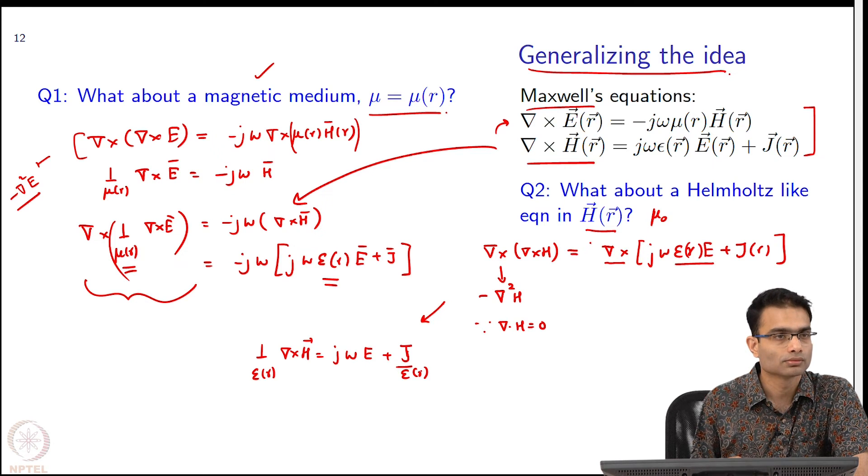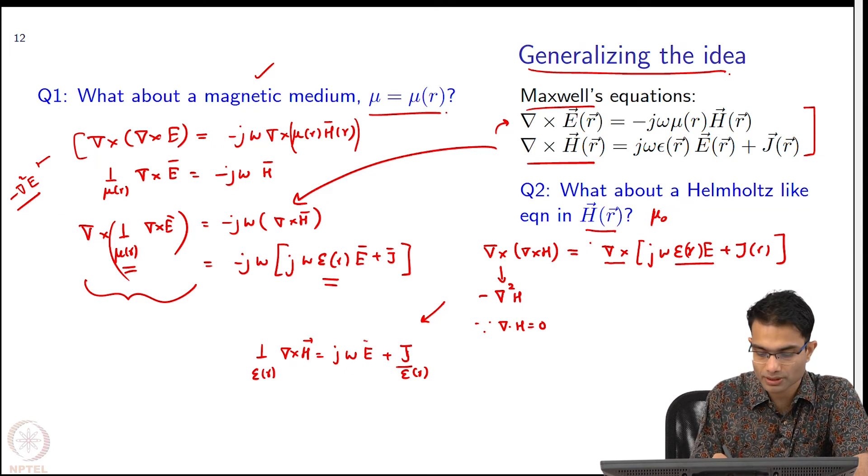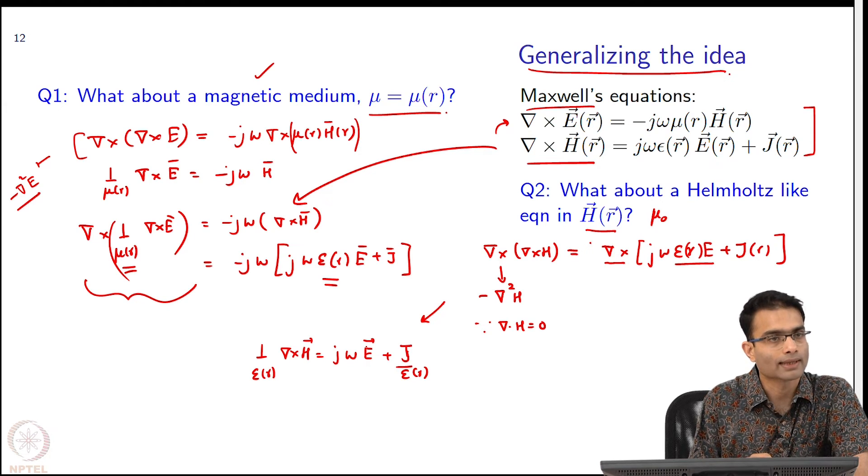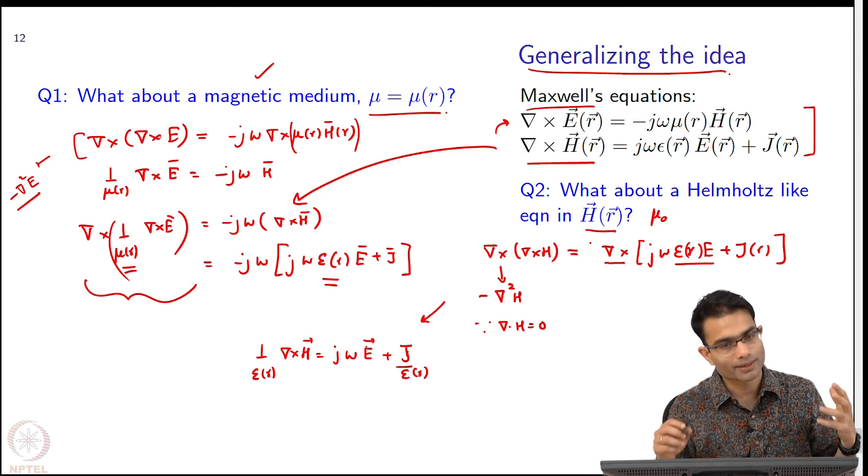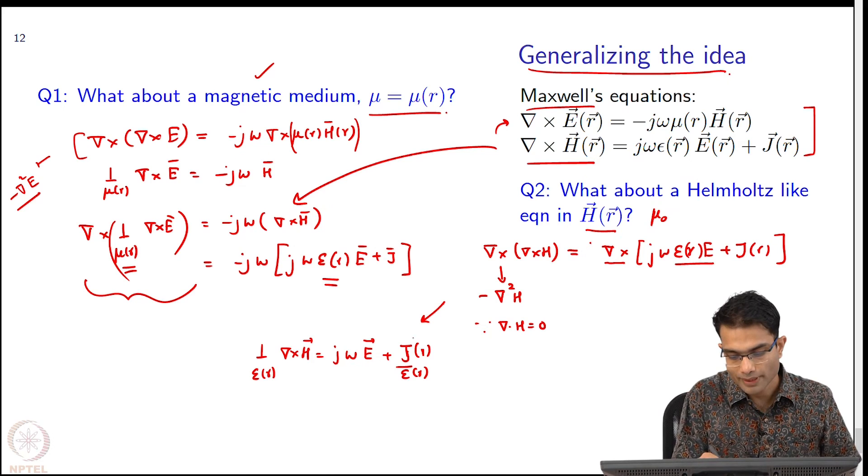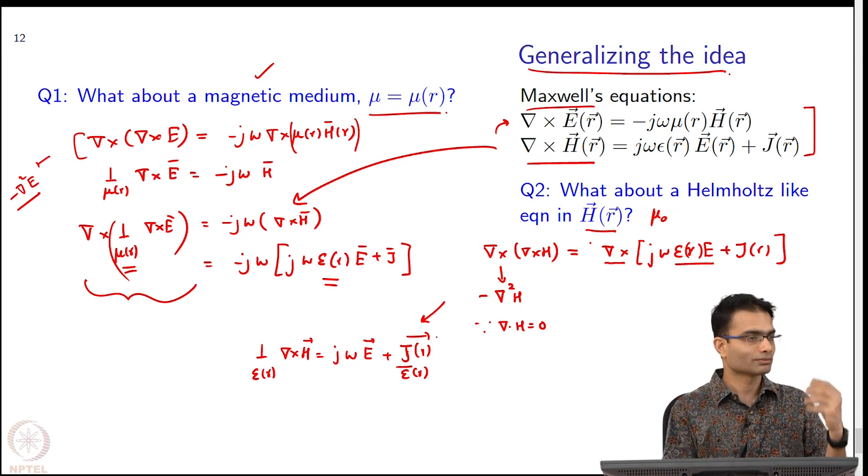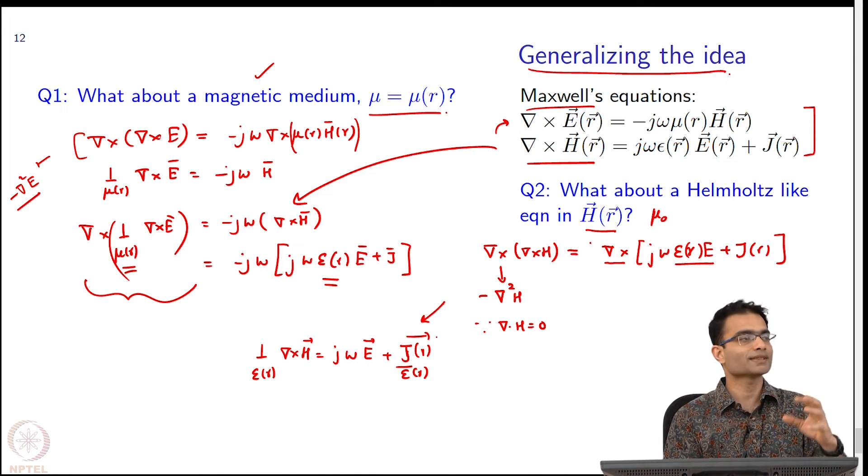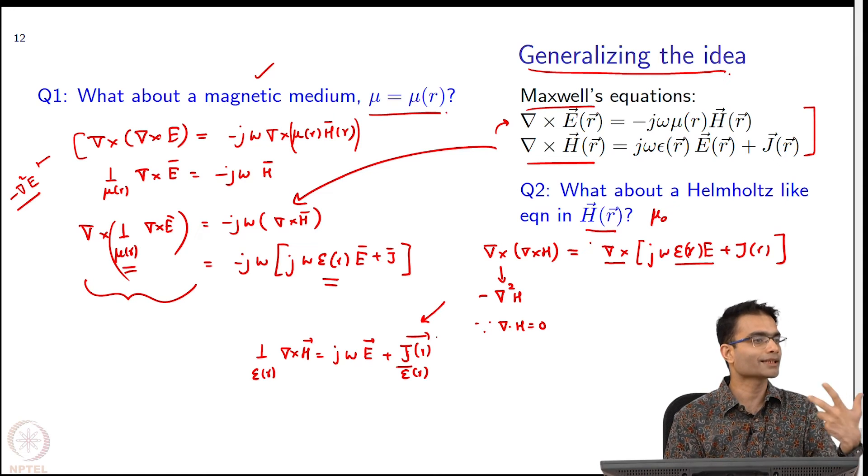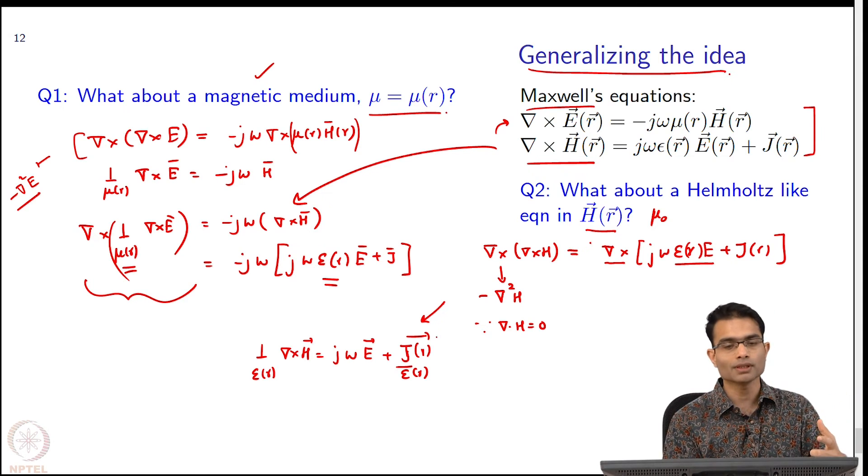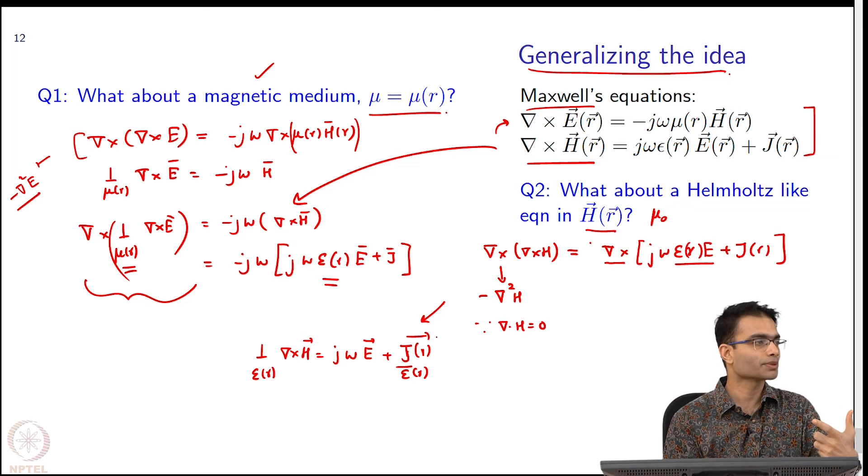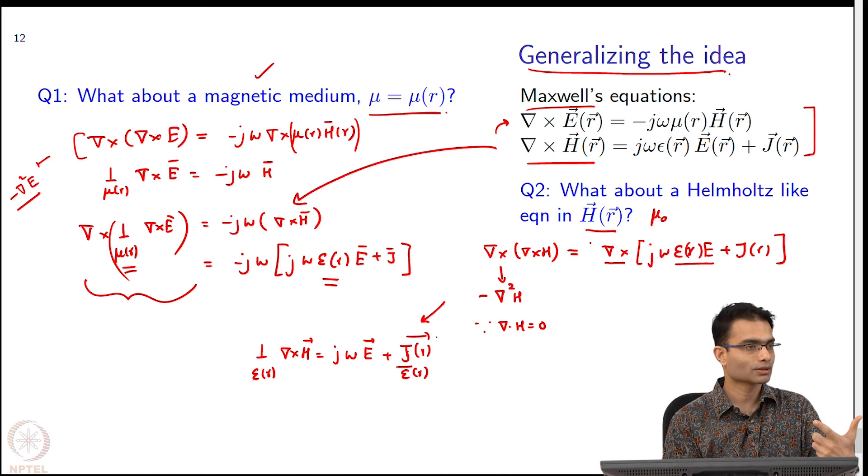Now, I can take the curl, I will eliminate E from this equation. So, I am paying a price now, I have a j by epsilon everywhere, fine. But those are the ways in which you will get around these problems if you wanted to solve a Helmholtz equation in H, ok.